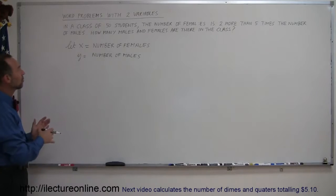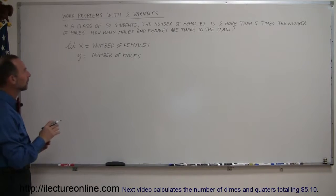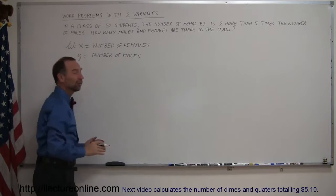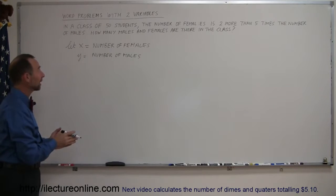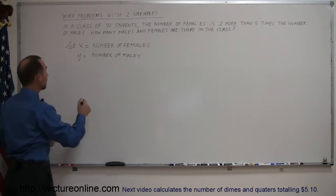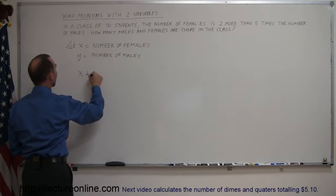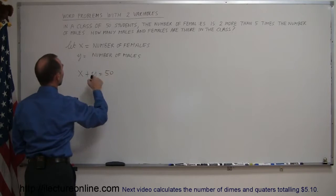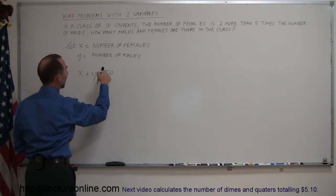Once you've done that, now you read the problem and try to use x and y to come up with two equations. Since you know that there's only males and females in the class and there's a total of 50 students, that means that x plus y equals 50. The number of females plus the number of males must add up to 50.